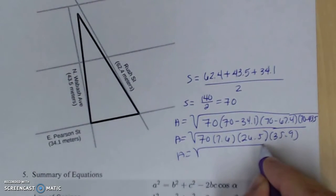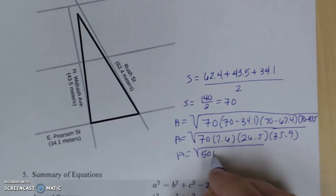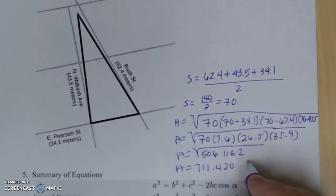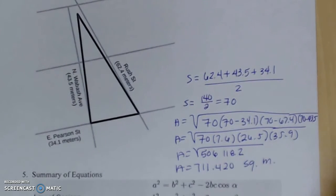Multiply all those together and you get 506,118.2. Square root that to give you 711.42 square meters.